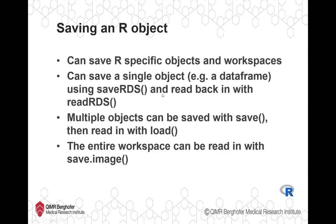The other thing we'll look at is how to save R objects as specific R files. We can save R-specific objects and workspaces and call them back into R later on without having to convert them to a CSV or other format. We can save a single object — like a data frame or model output — using saveRDS(), and read it back in with readRDS(). We can save multiple objects with the save() function, or save an entire workspace and load it back in with the load() function.